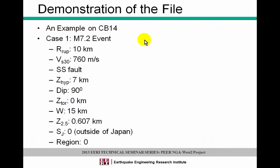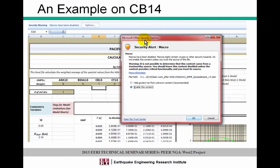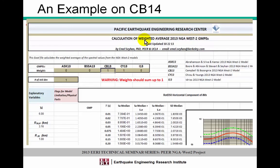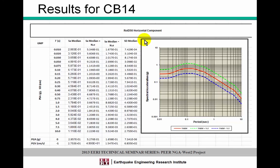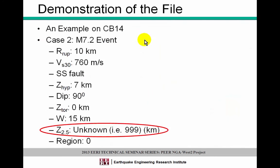Let me give you an example. Say I have a magnitude 7.2 event, the distance is 10 kilometers on rock, and it's a vertical strike-slip fault. The hypocentral depth is known at 7 kilometers, there's no depth to the top of rupture, the width of the fault is 15 kilometers, the basin depth is 0.6, and the site is in California. First you open the Excel file and enable macros, otherwise you will get errors. Then assign weights to each GMPE — the weights must sum to 1. You then enter your input parameters and get outputs on the main sheet: PGA, PGV, and PSA for 21 oscillator periods, plus plus-and-minus standard deviations.